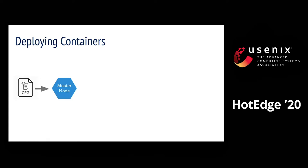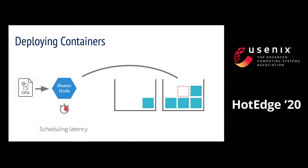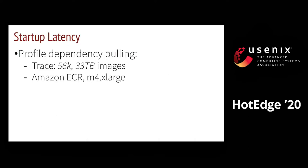Let's take a closer look. As a simplifying example, to launch a container, one submits its configuration file to the cluster's master node, which picks a node to run the container. Then the node agent fetches or pulls the container image from a remote repository. And finally, it starts the container. We micro-benchmark each of these steps to understand how much time each step takes to complete.